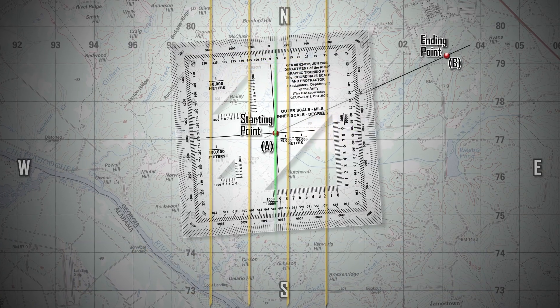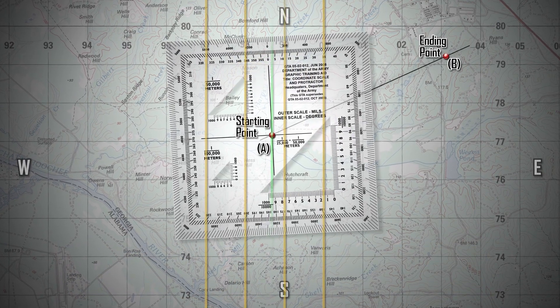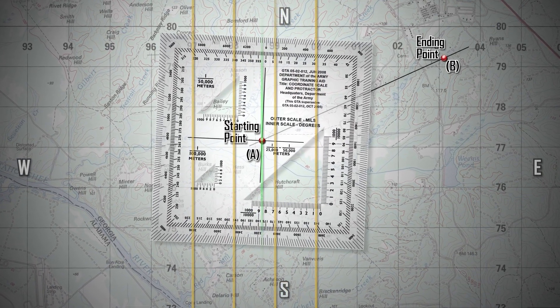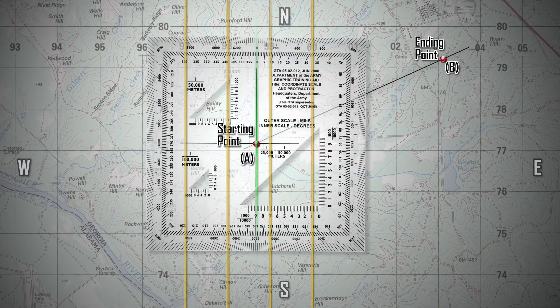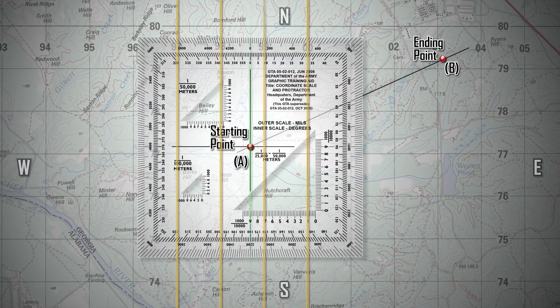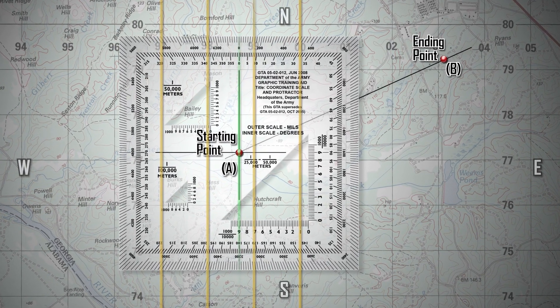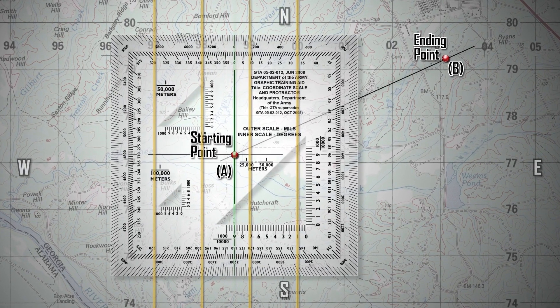While keeping the index in place, align the protractor baseline, or 0 to 180-degree line, making it parallel to a vertical north-south map grid line.